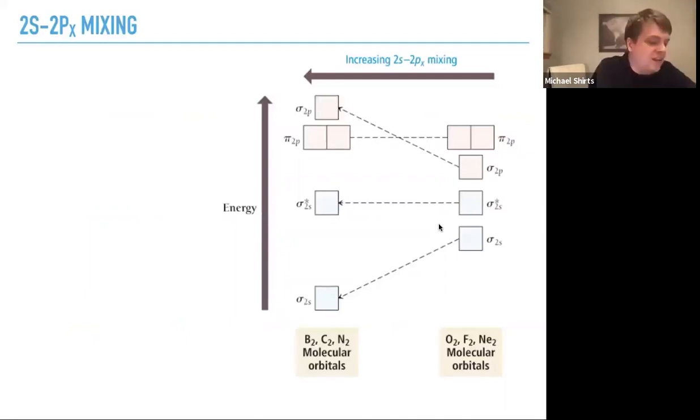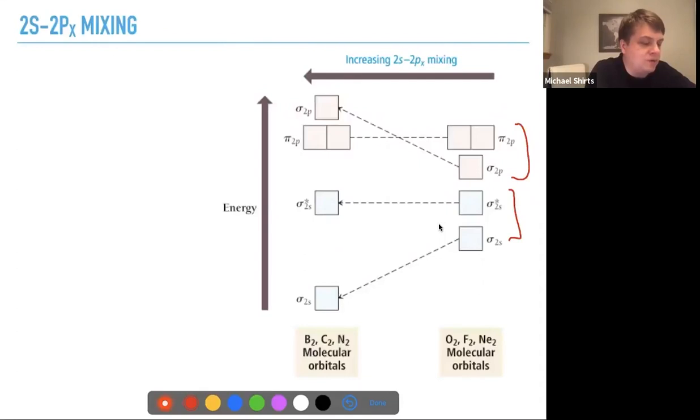This is the unmixed energy levels. You have your sigma here, you have your sigma 2s orbitals down here, and your sigma 2p and your pi 2p orbitals up here.